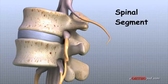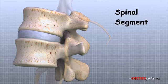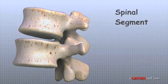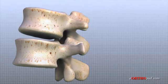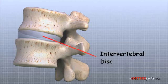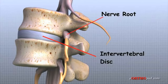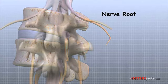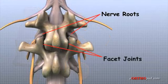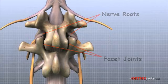It is sometimes easier to understand the spine by looking at a single spinal segment. The spinal segment includes two vertebrae, the intervertebral disc between them, the two nerve roots that leave the spinal cord at that level, and the small facet joints that link each level of the spinal column.